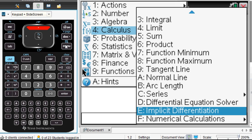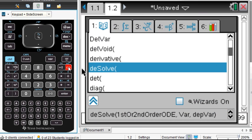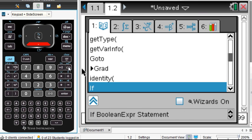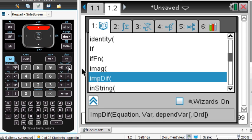And so a helpful tool is to just press the catalog button. So here's our cute little catalog. And if I type I, I can quickly get up here to implicit diff. We need to have an equation, we need to have a variable and the dependent variable, and then we can do the order.